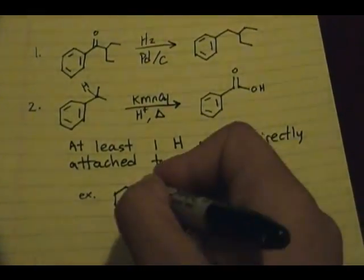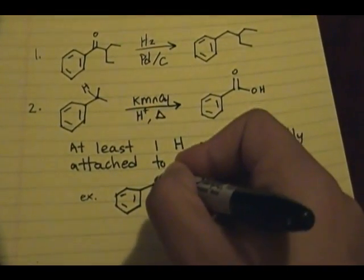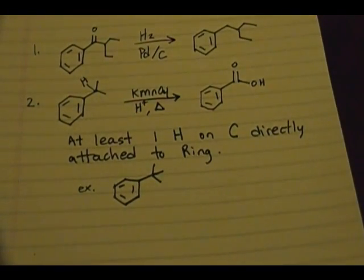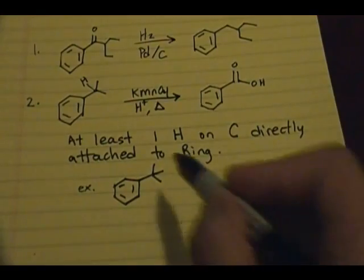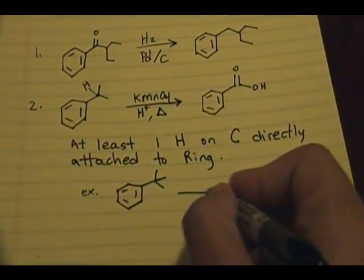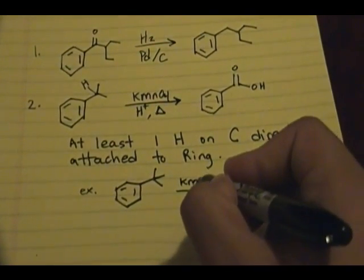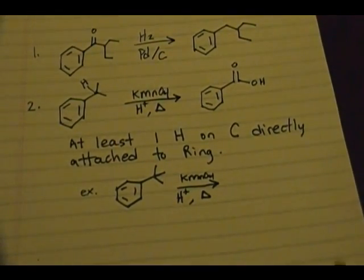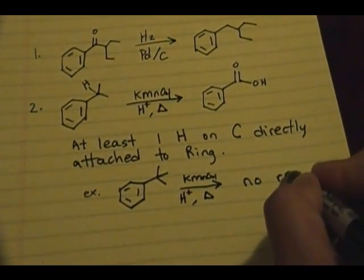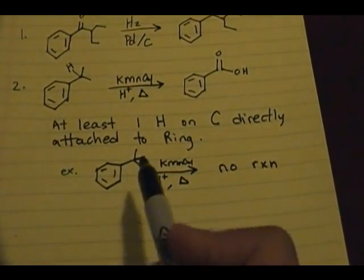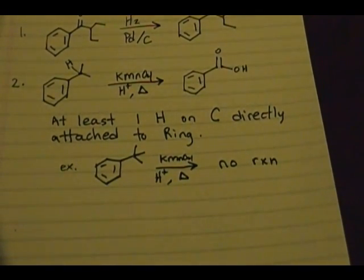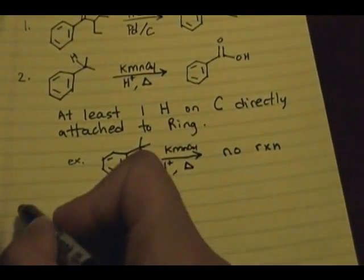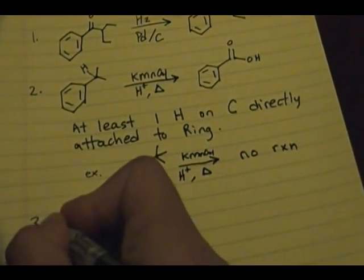For example, if you have an aromatic ring with a fully substituted alkyl group — meaning no H is present on the carbon directly attached to the ring — and you try to use KMnO₄, H⁺, and heat, the reaction will not work at all. No reaction occurs because there is no H on the carbon directly attached to the aromatic system. That concludes the second reaction.